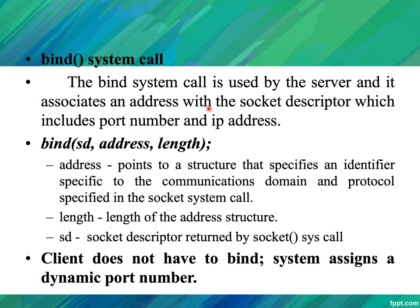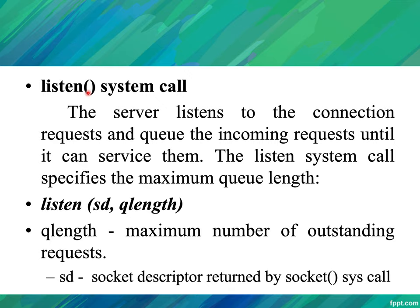The bind system call is used by the server to associate an address — including port number and IP address — with the socket descriptor. Its syntax is: bind(sd, address, length), where sd is the socket descriptor created by the socket system call, address points to a structure specifying the identifier for the communication domain and protocol, and length is the length of the address structure. The client does not need to call bind; it is dynamically assigned a port number.